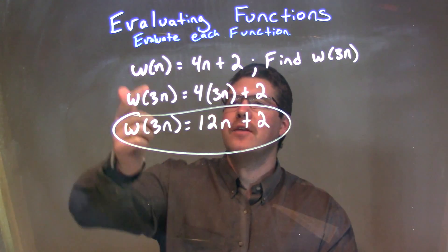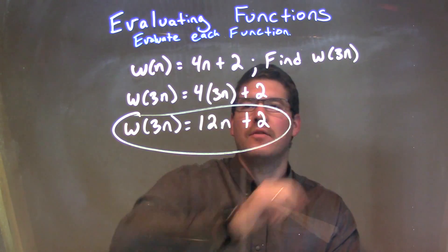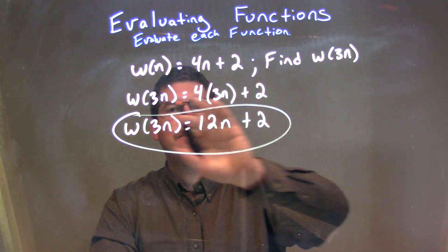So, let's recap. We're given w(n) equals 4n plus 2, and we need to find w(3n). Every single time we see an n, we'll plug in a 3n.